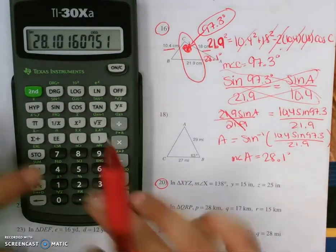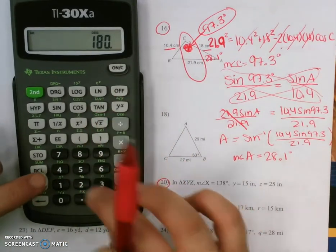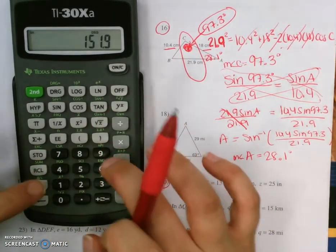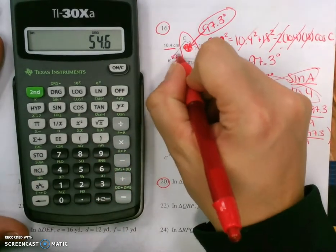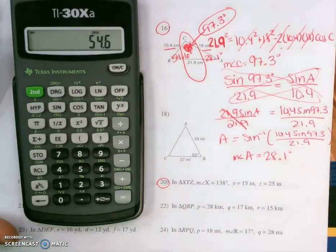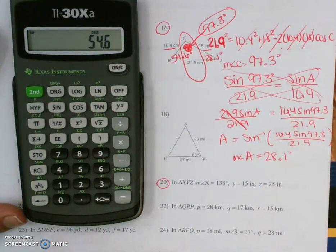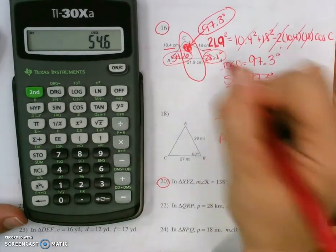So our last angle, 180 minus 28.1 minus 97.3, our last angle will be 54.6 degrees. And those are our three unknown angle measures.